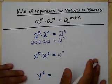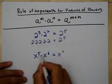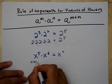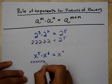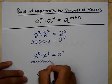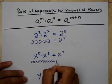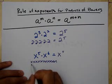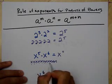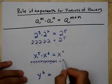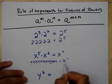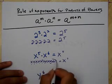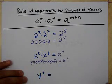So I could write this out as x multiplied out — 5 of them, then 6 of them — and count to see that it is x to the 11th. Because I have 5 x's, then 6 of them, and 11 all together.